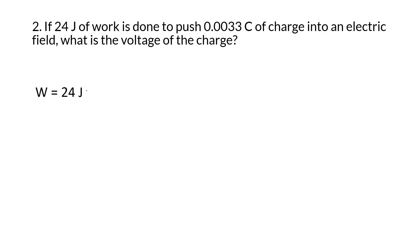This next one, we have 24 joules of work. We're pushing this charge, this 0.0033 coulomb charge, and it's asking you what the voltage is. That leads us to this equation. Plug in our values and we get an answer of 7,273 volts.